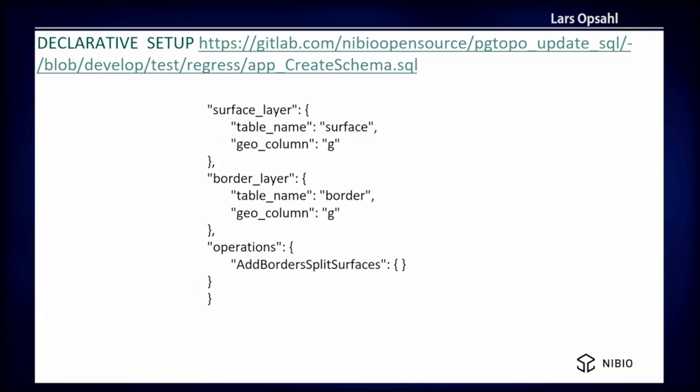The model allowed by this application — called topo-update-sql — is a subset of the possible models you can implement with PostGIS topology. In this model you have surfaces which are areal features and borders which are linear features. You are dividing the space into a uniform set of surfaces with no gaps allowed and no overlaps allowed. These two roles are mandatory. You can add arbitrary attributes to each of the two tables and define which operations are allowed. In this case we define an 'add borders split surfaces' operation, which is the one you saw in action before.